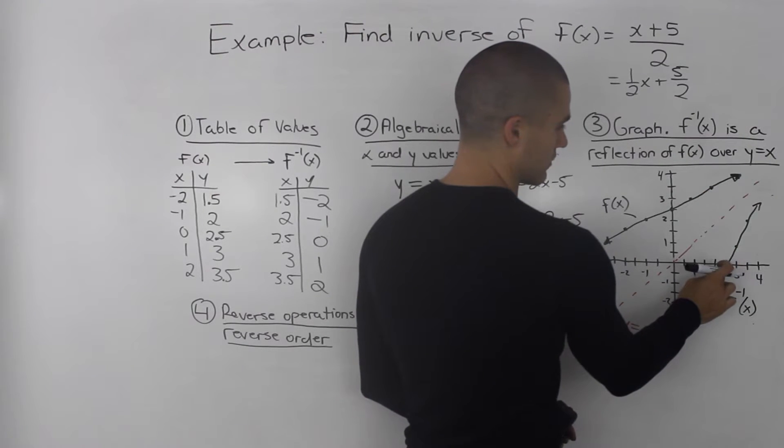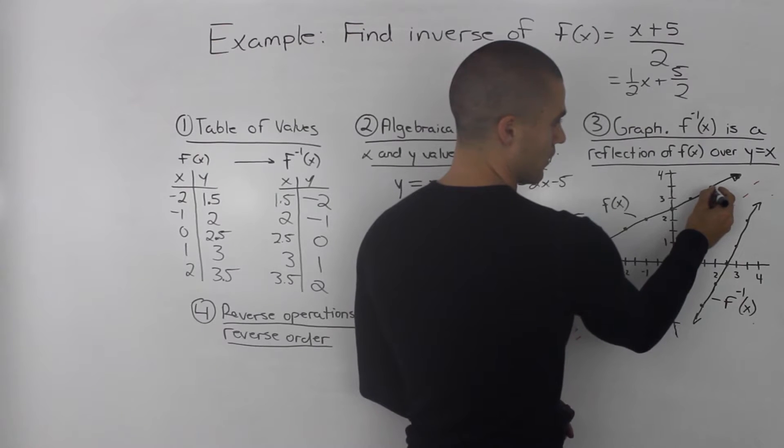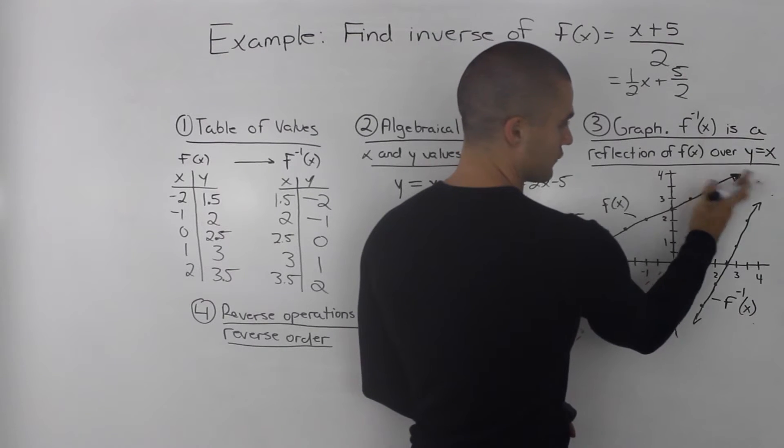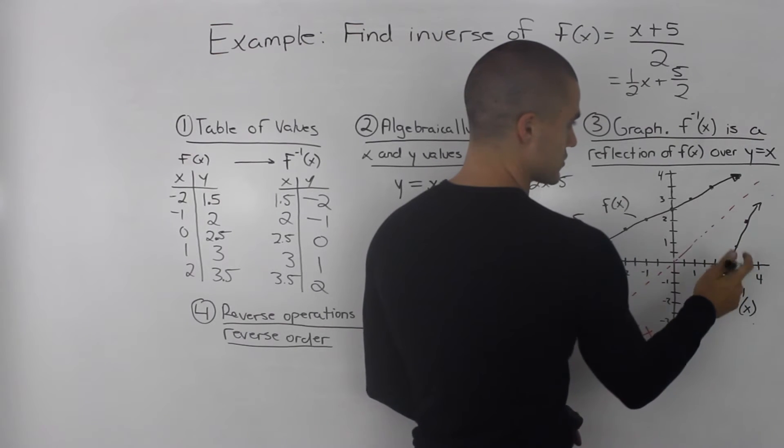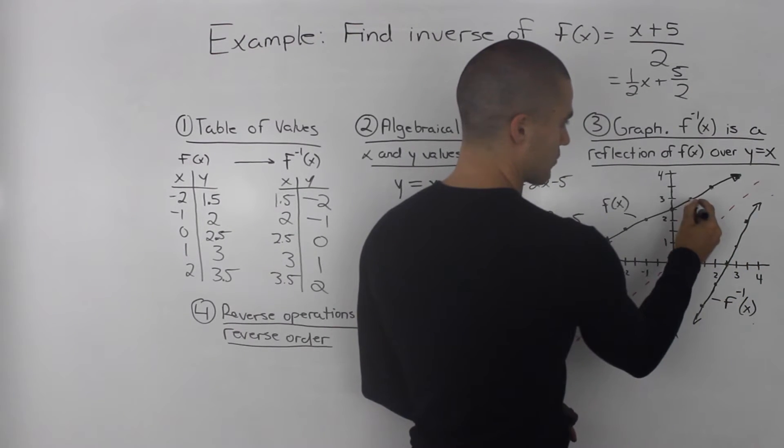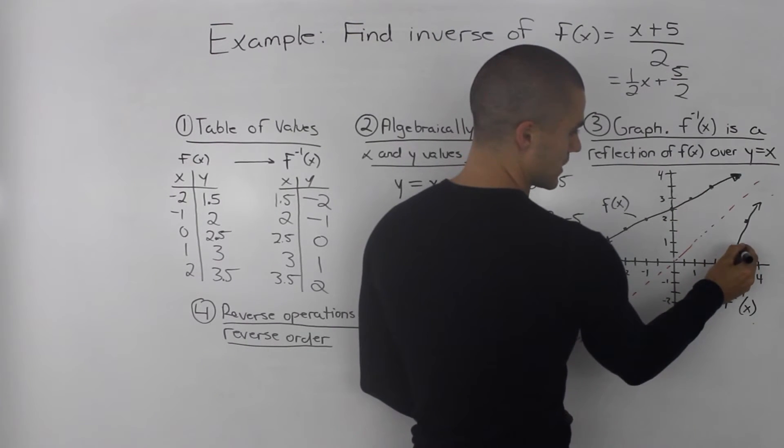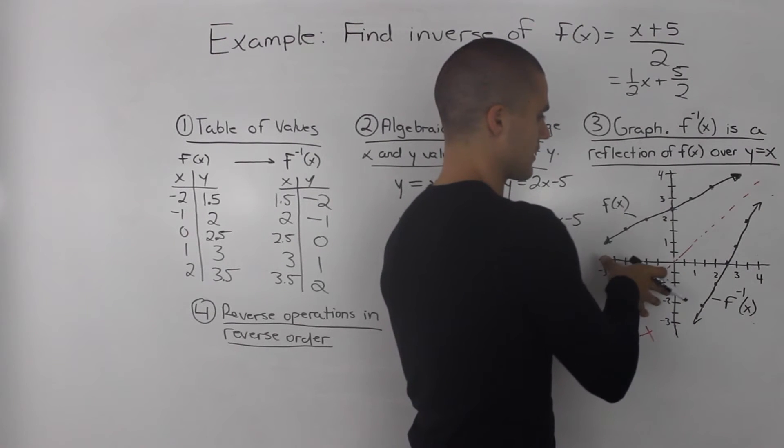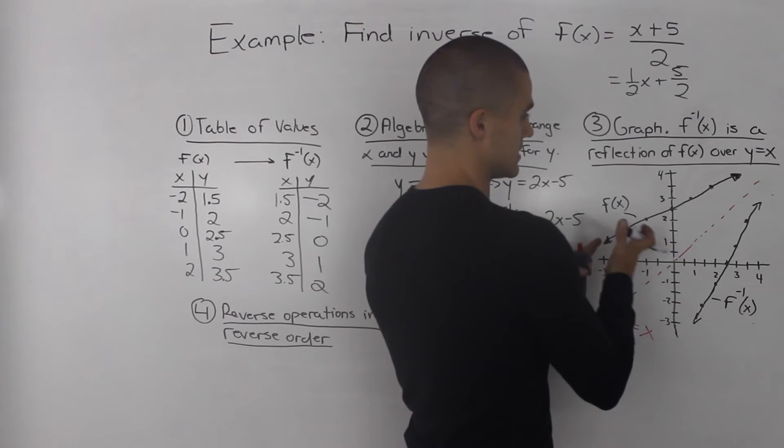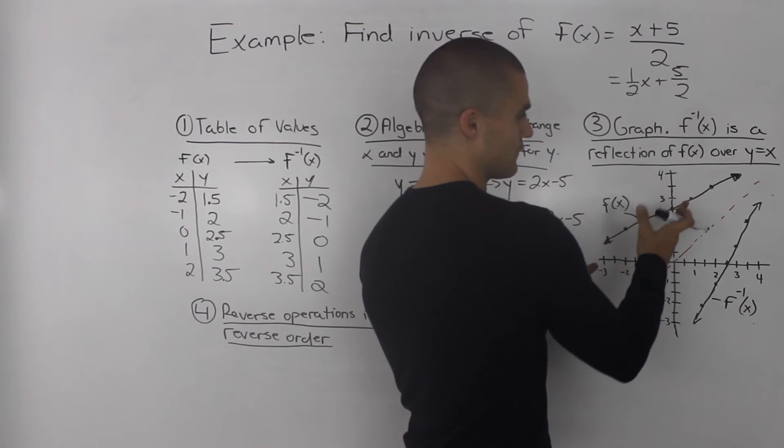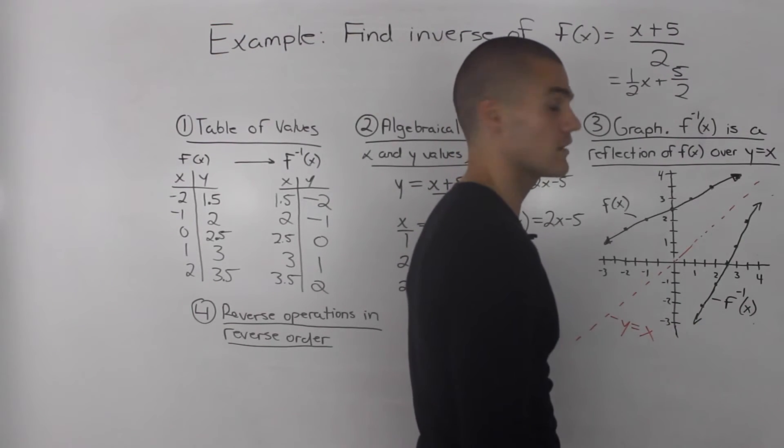So for example, this point here, this represents 2 and 3.5. Well, this point, when it's reflected over y equals x, we end up getting 3.5 and 2. This point here is 1 and 3. And then when we reflect over the line y equals x, we get 3 and 1. And then same thing for all of the respective points. Again, the process is you graph the function f(x) and then reflect it over the line y equals x and you end up getting the inverse.